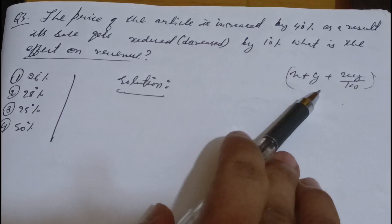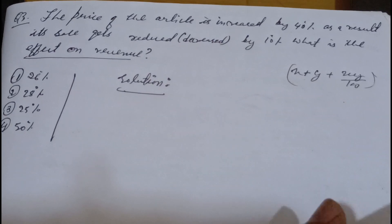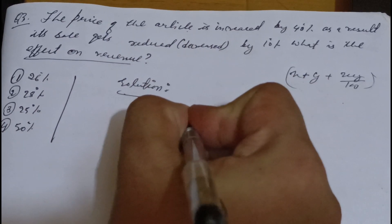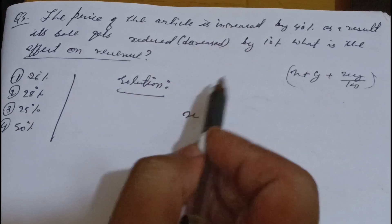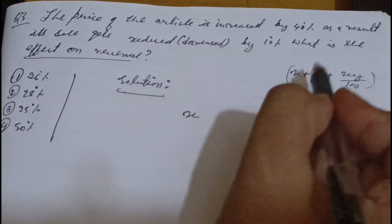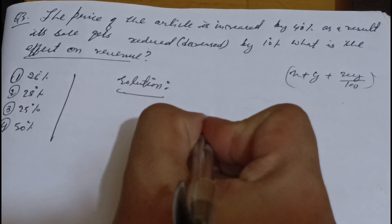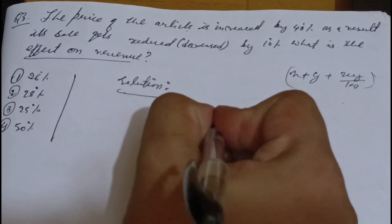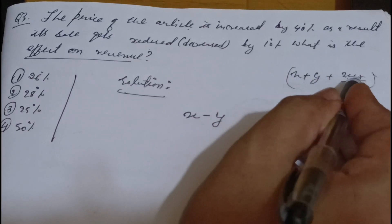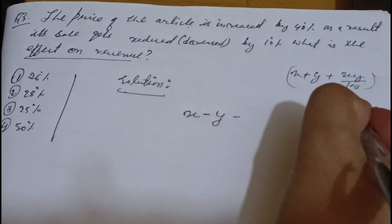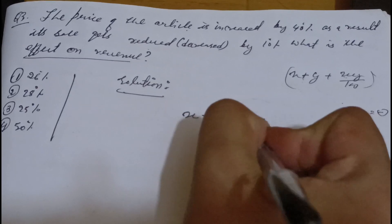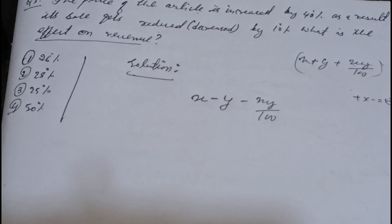How does the formula help? Let's solve it. The price of the article is increased — let us assume the first article is X. When you see a plus sign, the answer is positive. Increased by 40%. As a result the sale is reduced — when you see a reduction, keep the sign negative. Minus by 10%. Then in the case of X times Y, plus into minus gives minus.